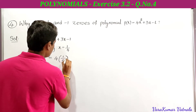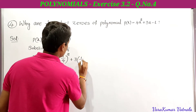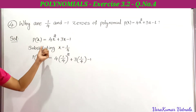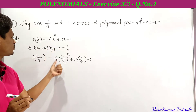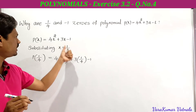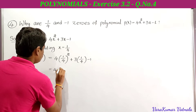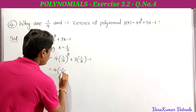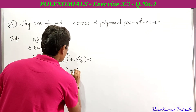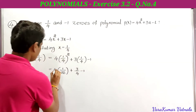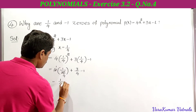... plus 3 into 1/4 minus 1. So p(1/4) = 4 × (1/4)² + 3 × (1/4) - 1. Now simplifying: 4 × (1/4)² = 4 × 1/16 = 1/4. And 3 × 1/4 = 3/4. So we have 1/4 + 3/4 - 1.